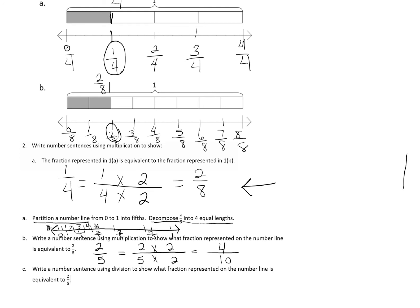Finally, it wants us to do the same thing but using division. We're using division to show that the fraction represented on the number line is equivalent to 2 fifths. So 2 fifths needs to be our answer at the end of the number sentence. Using division, I don't have any other information to fill in the rest of my number sentence, so I am going to work backwards using multiplication. 2 times, and we can pick any number, we can do times 3. So 2 times 3 equals 6. What you do on the top, you have to do on the bottom. So 5 times 3 equals 15. And so 2 fifths is equivalent to 6 fifteenths.